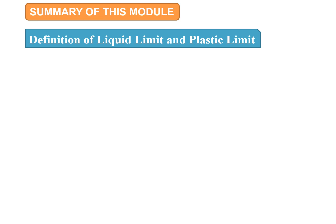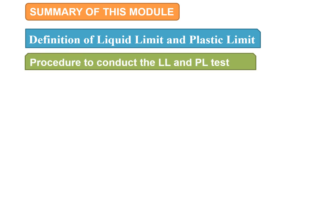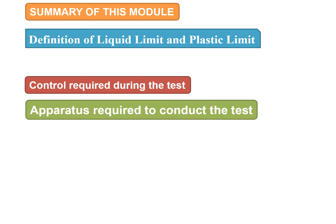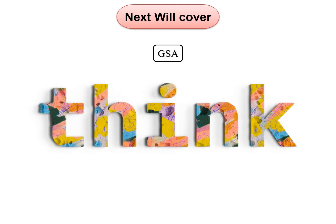In summary, this module covered the definitions of liquid limit and plastic limit, how the liquid limit and plastic limit tests are conducted, the procedures involved, controls required during the tests, and the apparatus required. In the next module, we will cover GSA — grain size analysis — which gives you the fraction of soils under different sizes of particles. Thank you very much.